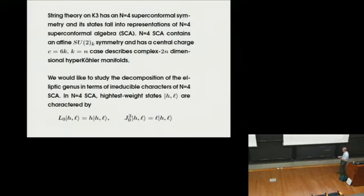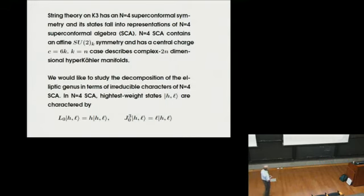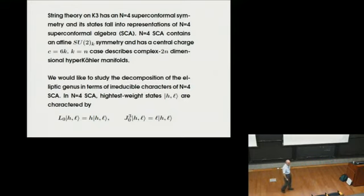Let me define the notation. The Cartan subalgebra of the N=4 superconformal algebra consists of operators whose eigenvalues are denoted h and l. Here h is like the energy or mass of the particle state, and l has to do with spin.